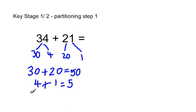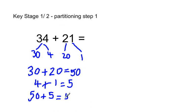And then we add together our two totals, so 50 plus 5 equals 55. So 34 plus 21 equals 55.